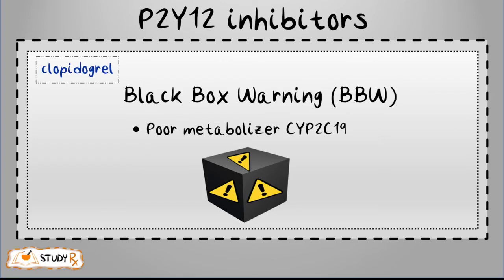Out of the top 200 medications prescribed in the United States, clopidogrel ranks at number 40. The black box warning for clopidogrel is a diminished antiplatelet effect in patients with two loss-of-function alleles on the CYP2C19 gene. Since clopidogrel is a prodrug converted by CYP450 and then CYP2C19, when a patient is a poor metabolizer of CYP2C19, we must consider a different treatment.